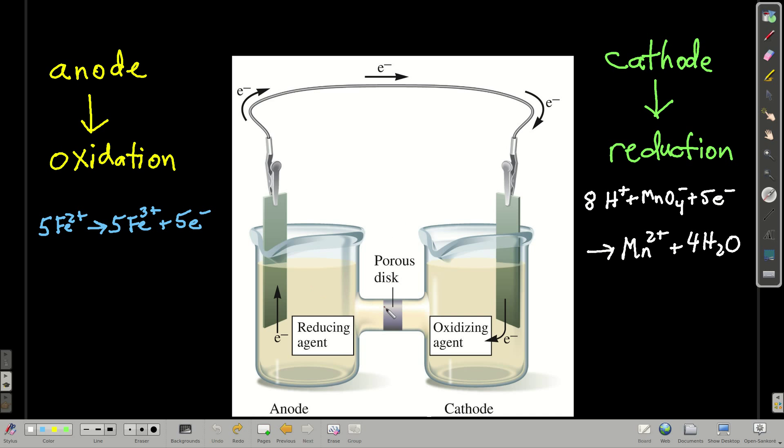We have a galvanic cell. We have the anode over here. The anode, this is where oxidation happens. Remember these terms. Anode means oxidation. Cathode means reduction.